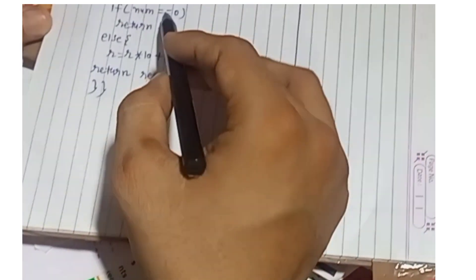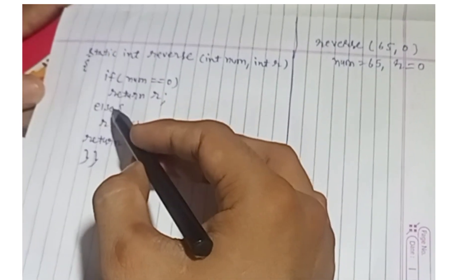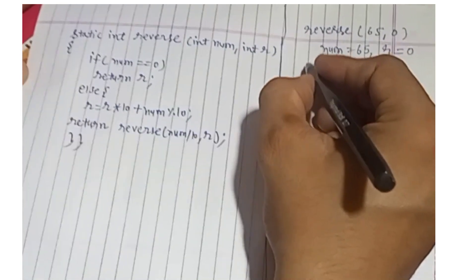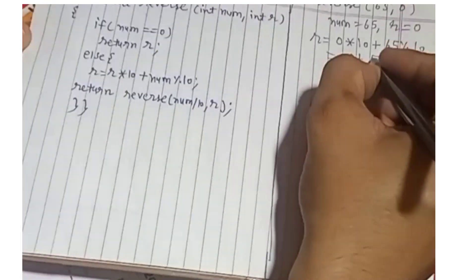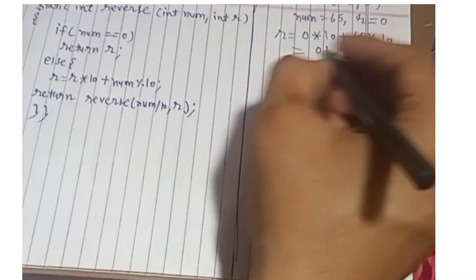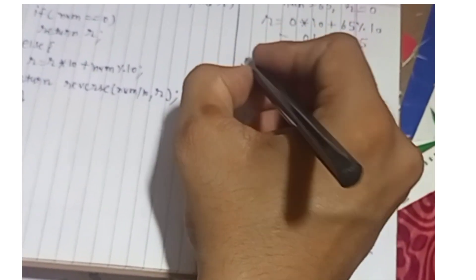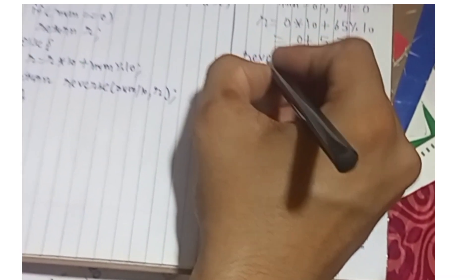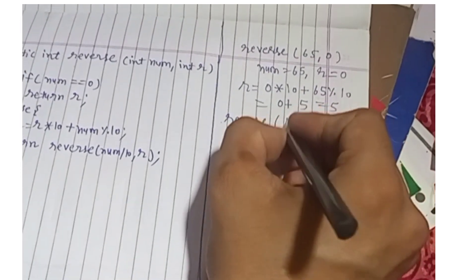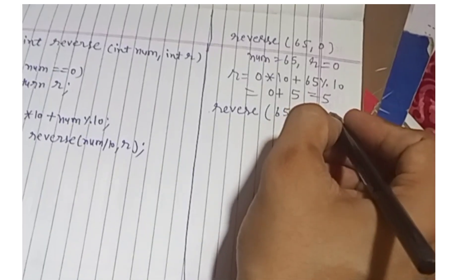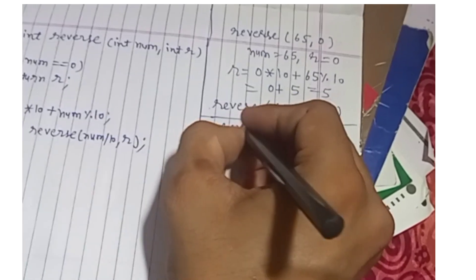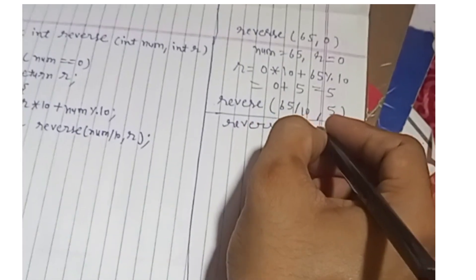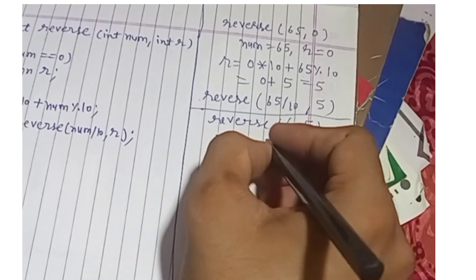Control goes to the else block. R is recalculated: R = 0 * 10 + (65 % 10) = 0 + 5 = 5. So R becomes 5. Then the method returns reverse(65 / 10, 5), which is reverse(6, 5). Now num is 6 and R is 5.